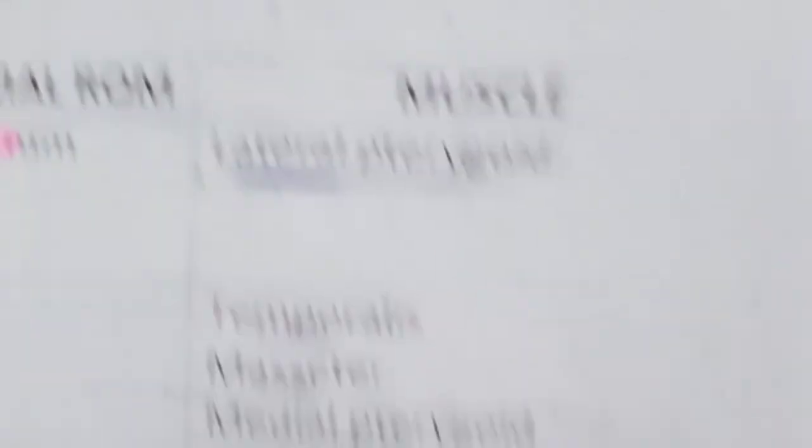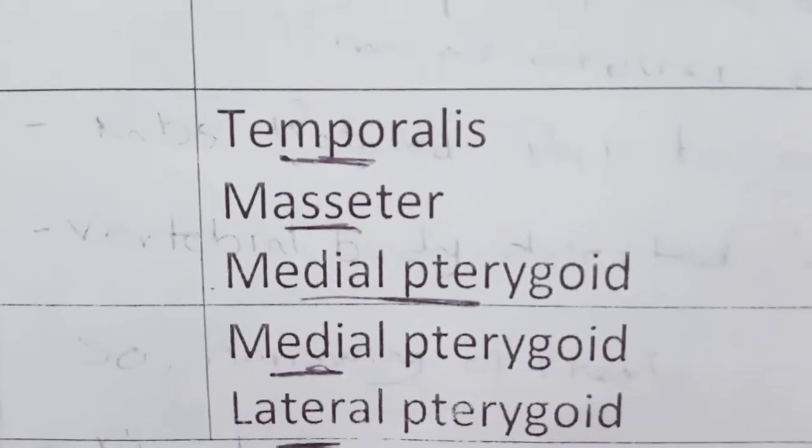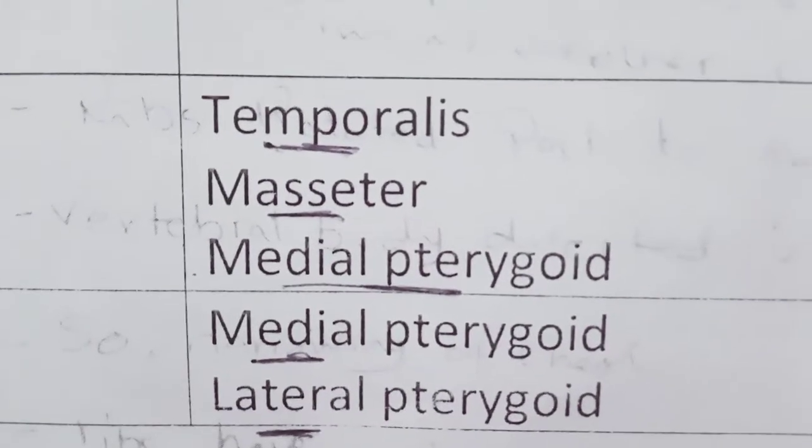Muscles of the TMJ: opening is 35-55 millimeters with depression of the mandible by gravity. Closing of the mouth involves elevation of the mandible for occlusion.